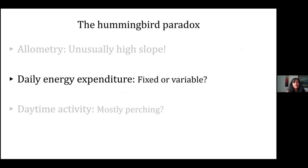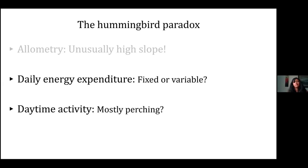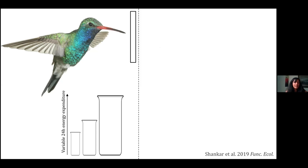Next, we look at whether daily energy expenditure is fixed or variable. Can an individual, species, or population change its daily energy requirements in response to what's happening around it? And what is it spending its energy on — is it spending energy on activity like hovering, or more on thermoregulating and water flux? To look at this, let's take an analogy: imagine a beaker represents daily energy expenditure, where the size of the beaker tells you how much energy the bird spends in 24 hours. We used the broad-billed hummingbird as a model species to study this energy budget variation.